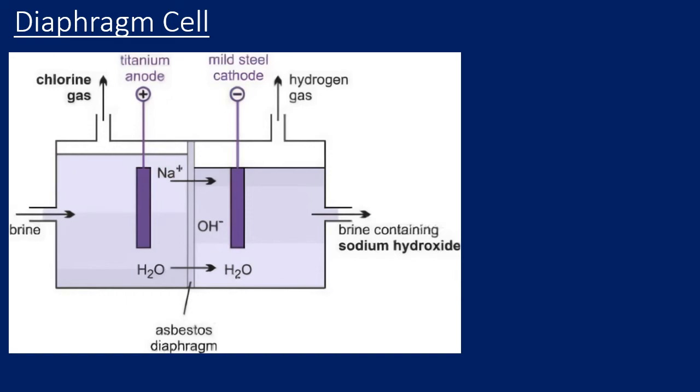The brine is always maintained that way, pumped in to maintain a higher level on the left-hand side of that cell. This ensures the flow is from left to right, to ensure that the brine always flows left to right to prevent the backward movement of the sodium hydroxide.